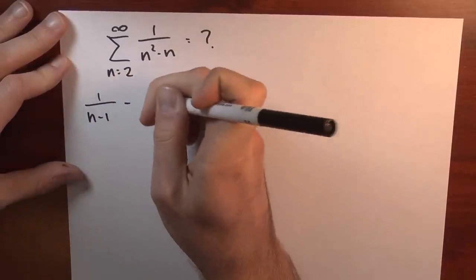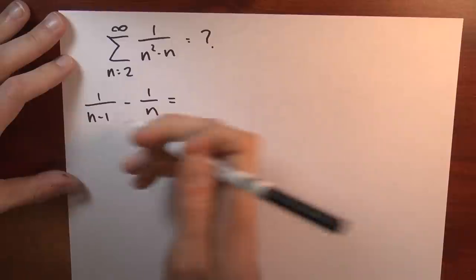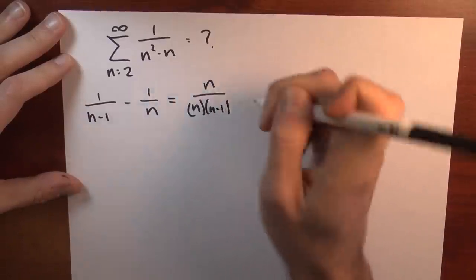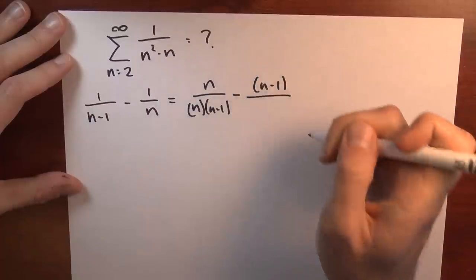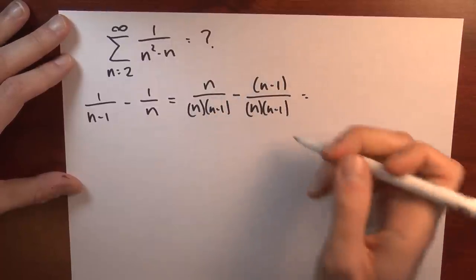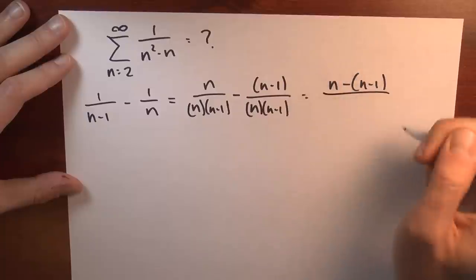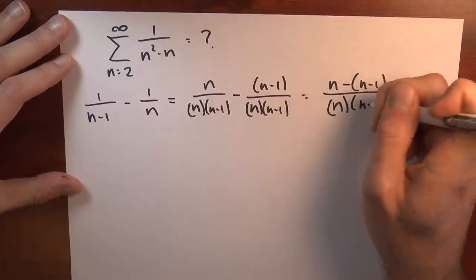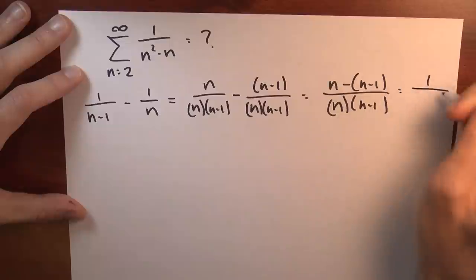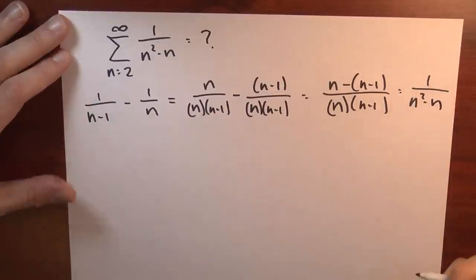What is 1 over n minus 1 minus 1 over n? Put that over a common denominator: this is n over n times n minus 1, minus n minus 1 over n times n minus 1. Now doing the subtraction gives n minus (n minus 1) over n times n minus 1. That numerator is just 1, and the denominator is n squared minus n.